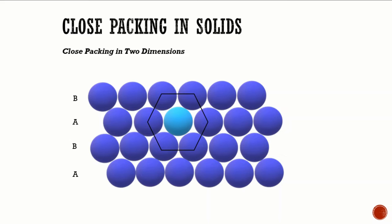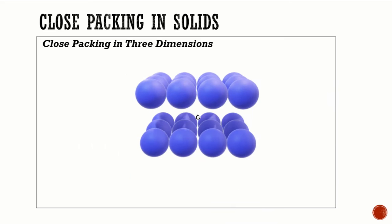This packing is more efficient than square close packing. Each sphere is in contact with six of its neighbors and the two-dimensional coordination number is six. The centers of these six spheres are at the corners of a regular hexagon, hence this packing is called two-dimensional hexagonal close packing.